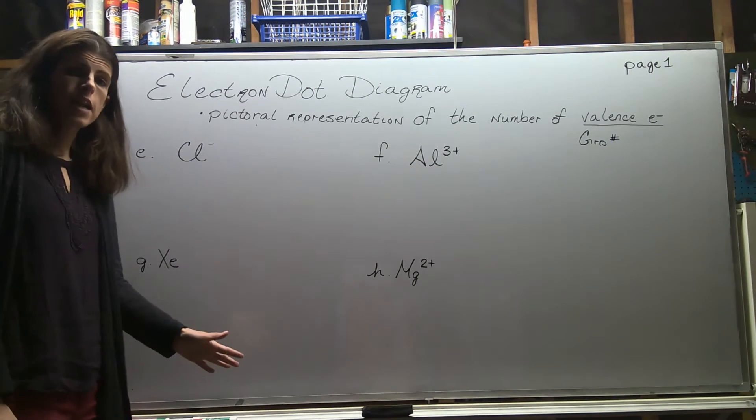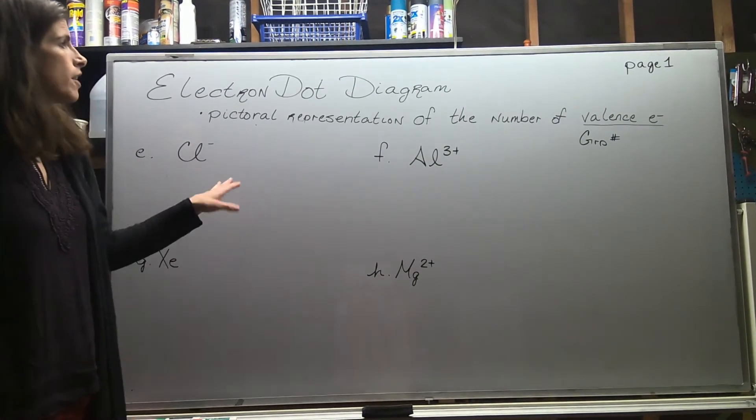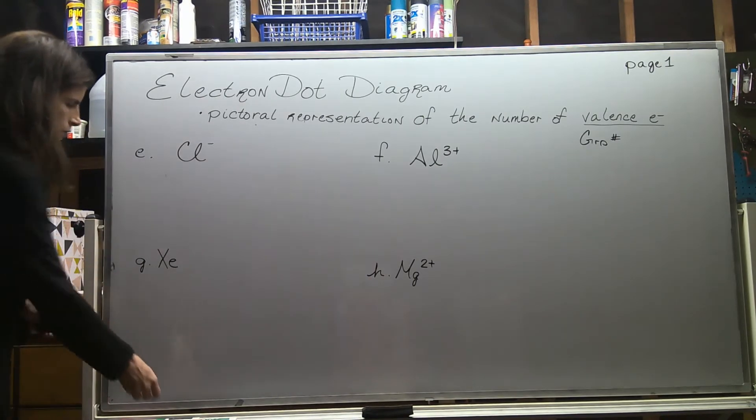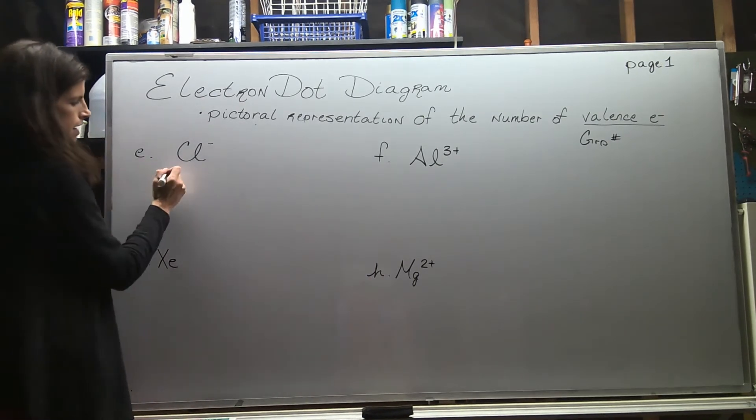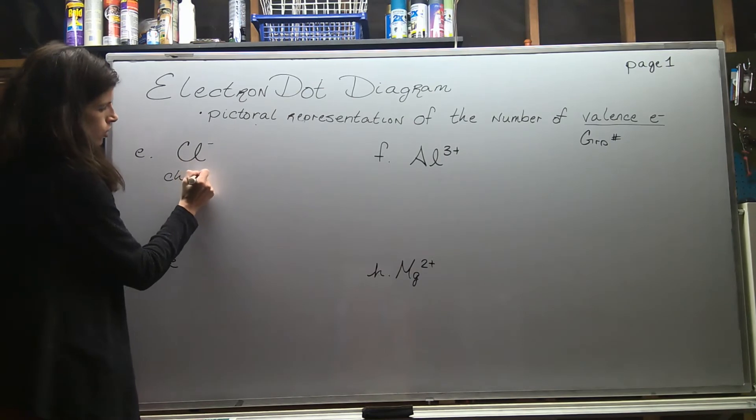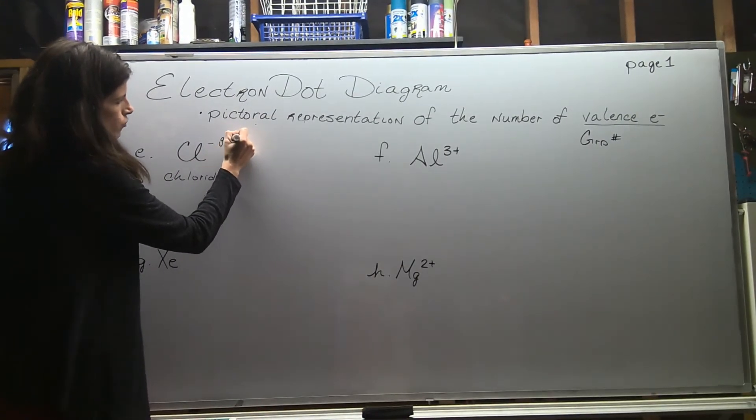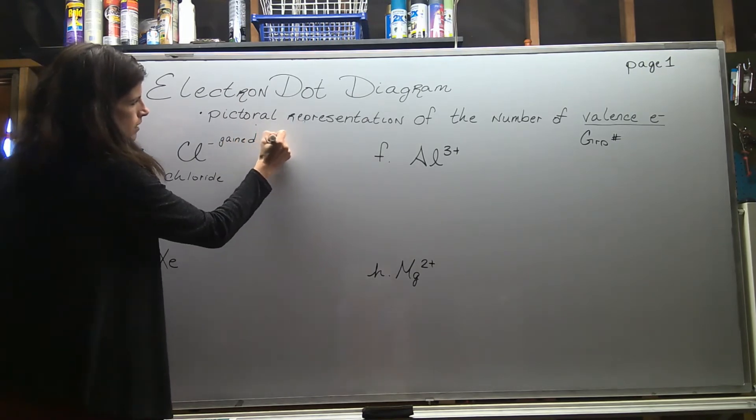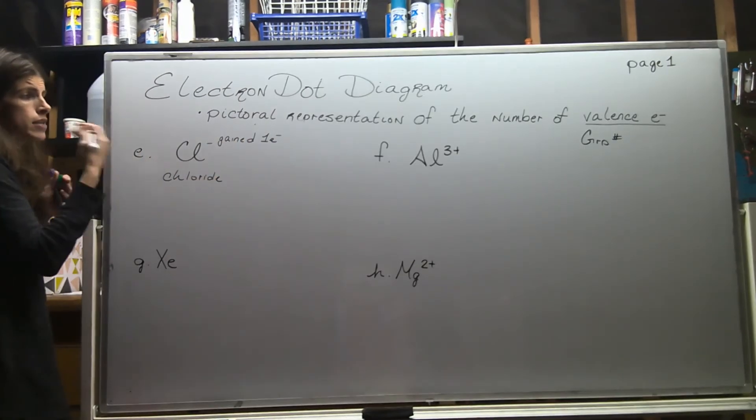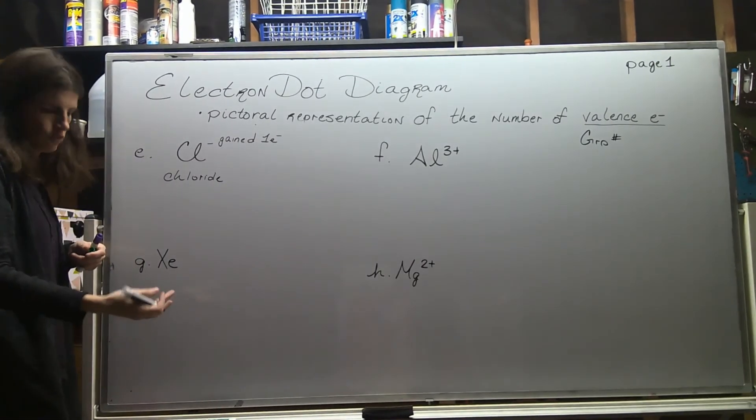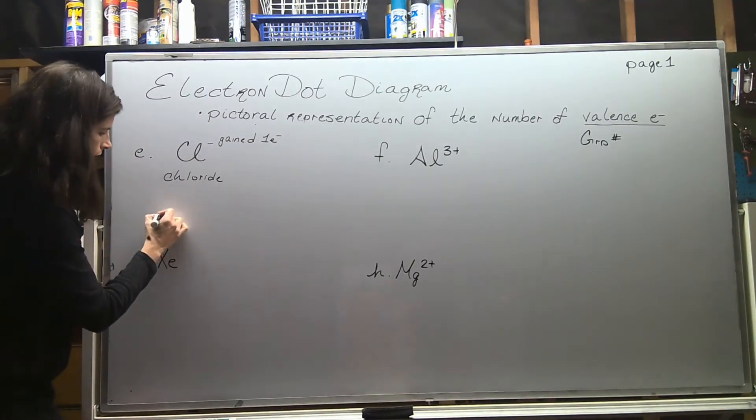In this section we're going to look at the electron dot diagrams for some of our ions. Here we have chloride - it has a negative one charge, which tells us that it gained one electron. Especially at first, it's very useful to compare the ion to the neutral counterpart.